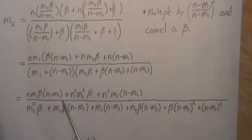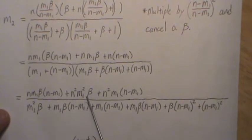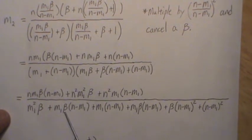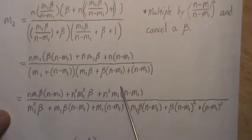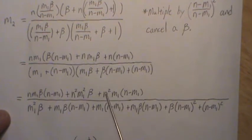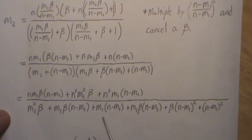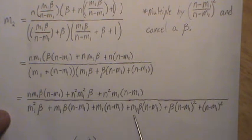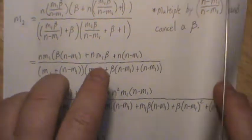And so now what I want to do is collect terms that have a beta. So we'll do that in the denominator, and then collect the terms that don't have a beta, which would be this one, this one, and this. So when I turn it over, that's what we did.